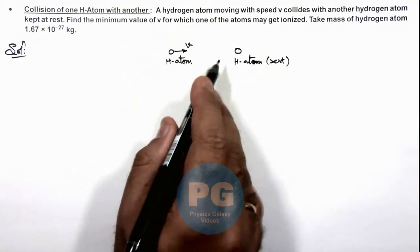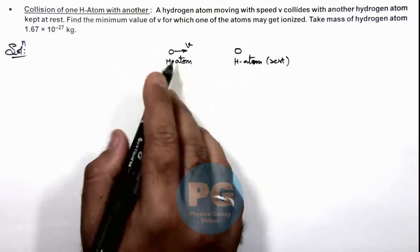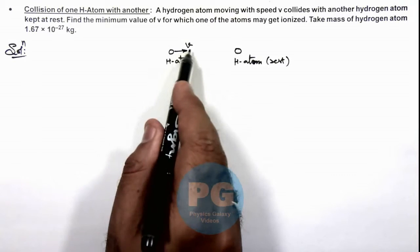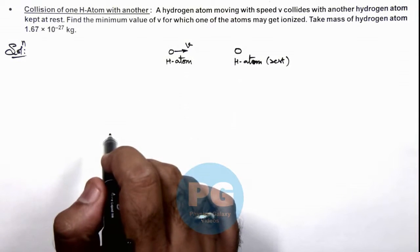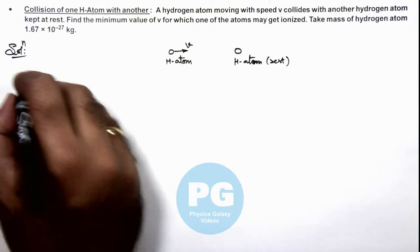So first we calculate the maximum possible energy loss in this collision. We have studied that the maximum possible energy loss takes place when the collision is considered to be perfectly inelastic. So we can write if perfectly inelastic collision takes place...